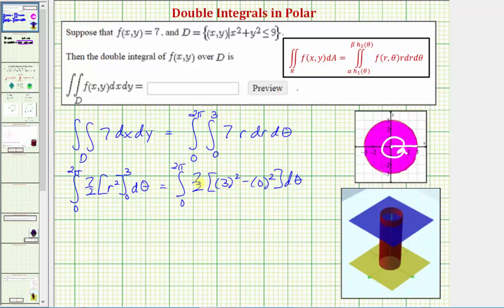So notice how here we just have seven halves times nine, which is 63 halves, let's go ahead and factor that out. So we'd have 63 halves times the integral from zero to two pi of just d theta, or one d theta.